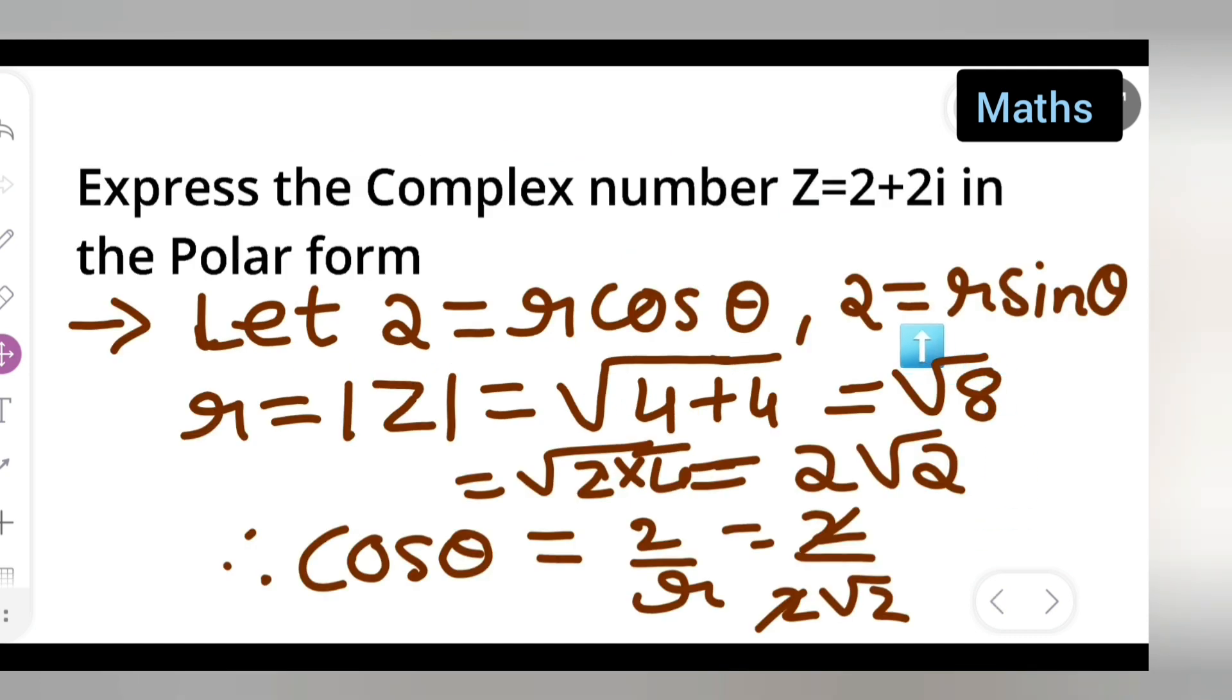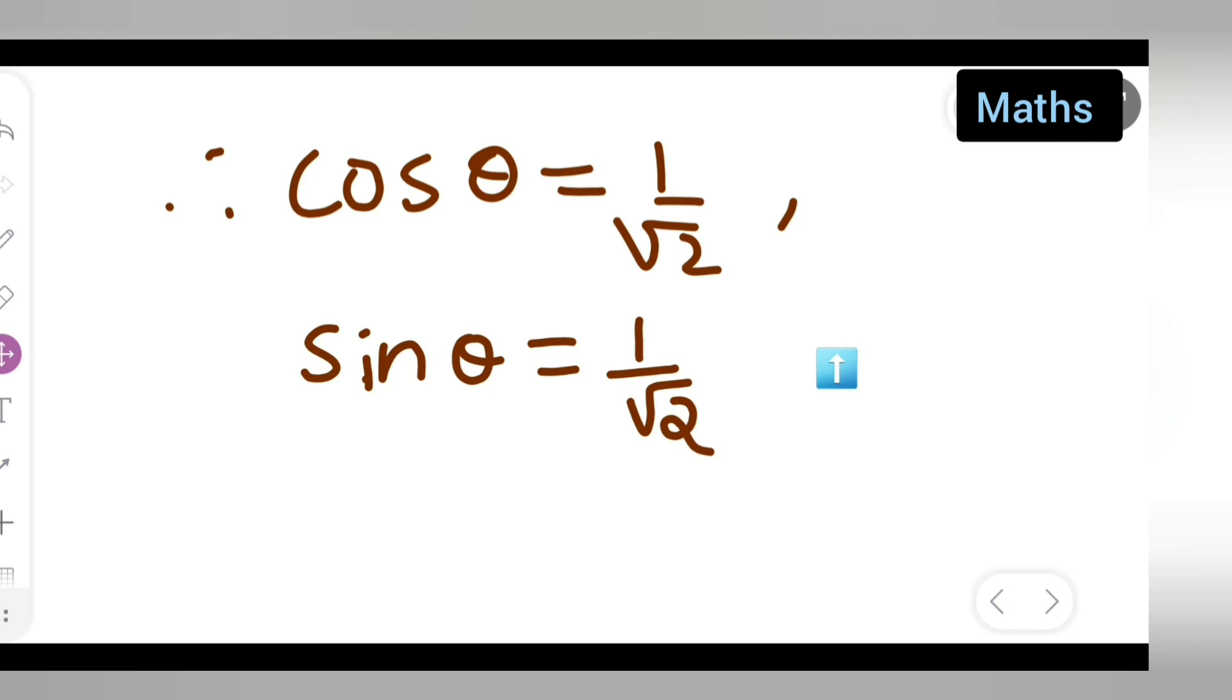If you take 2 upon r equals sin theta, substitute the value of r, you will get root 2 will get cancelled, 1 upon root 2. Now what is cos of 1 upon root 2 and sin of this? So the theta value is going to be pi by 4.